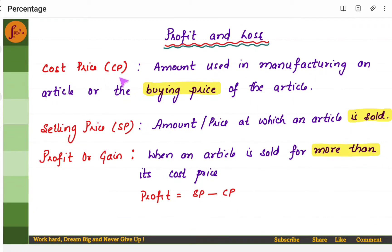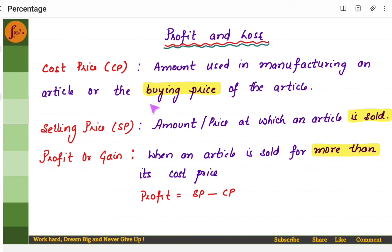Cost price is the amount or the price incurred in manufacturing a product, article, or item. Suppose you are manufacturing an item — what is the amount required to manufacture it? That becomes the cost price. It is also called the buying price of the article.